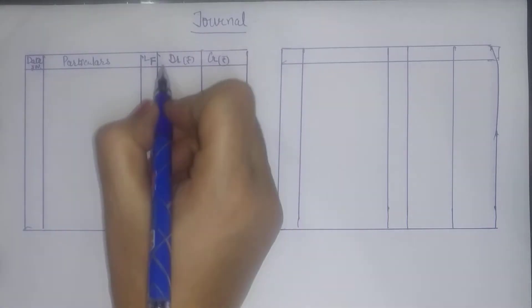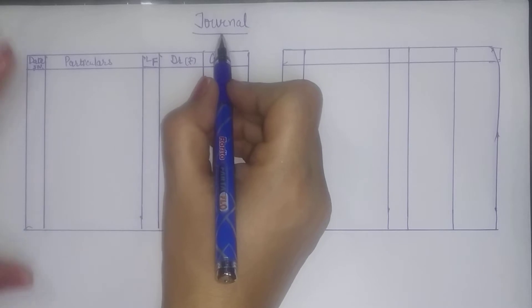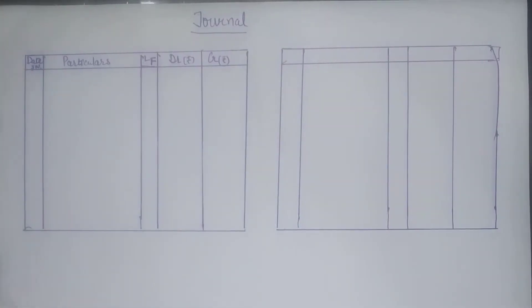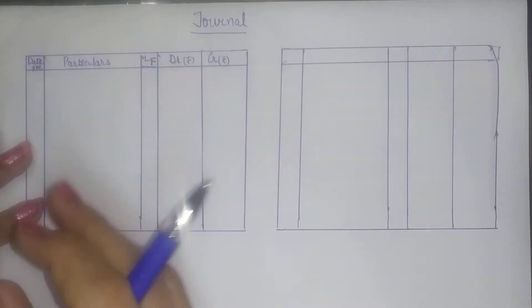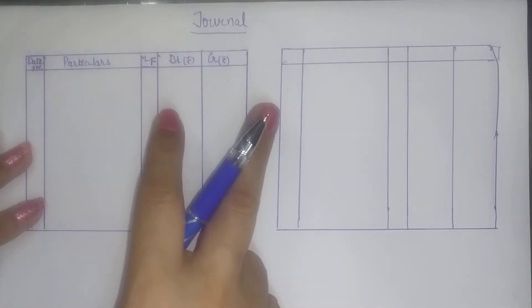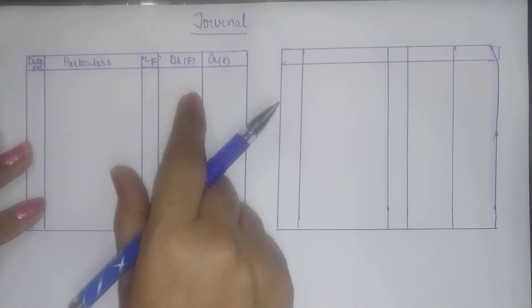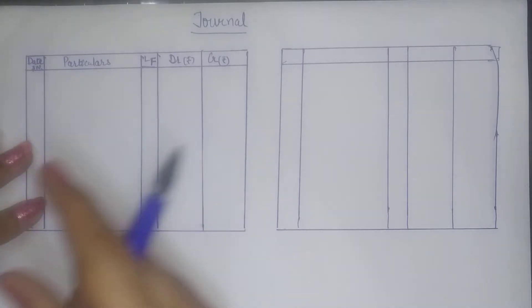Now let us understand the ledger folio. The journal is in a journal book. There is a column for ledger folio. In the ledger book, there is a column for journal folio. Folio means page number. As I explained in the previous video, there are two main steps for accounting. Number one: we record every transaction in the journal as an entry according to the timing of their happening.